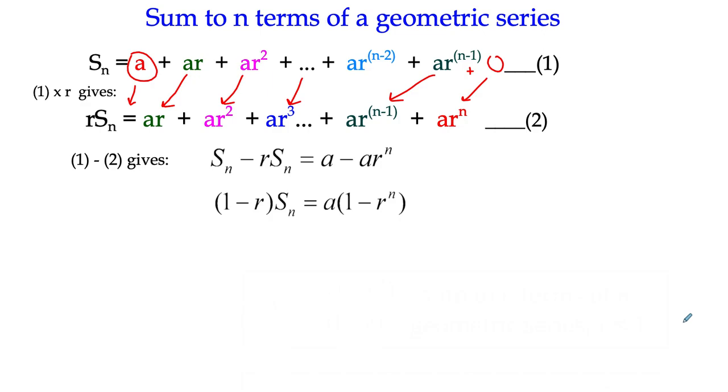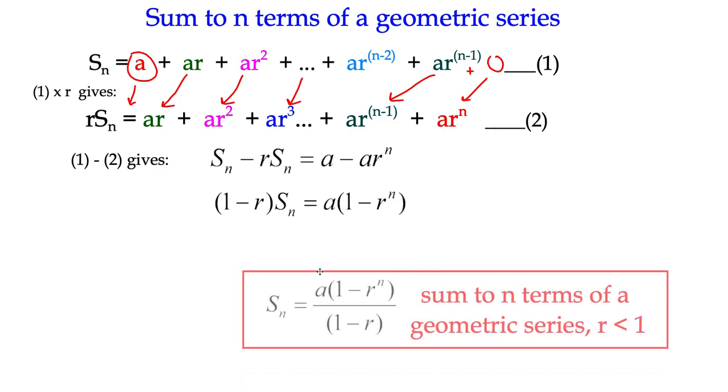We have a common factor on both sides, and then we can divide through by 1 minus r, which gives us a little formula, which we can use for the sum to n terms of a geometric series. Sum to n terms is a multiplied by 1 minus r to the n, all over 1 minus r.